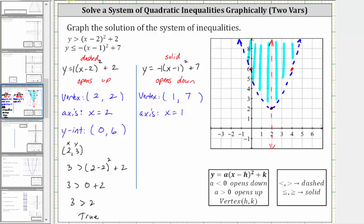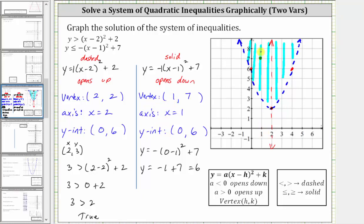Before we graph this, let's also determine the y-intercept of this quadratic function. We find the y-intercept by setting x equal to zero, then determining the value of y. Substituting zero for x, we have y equals the opposite of the quantity zero minus one squared plus seven. Simplifying inside the parentheses, we have negative one. The square of negative one is positive one, but we have a negative sign, so this simplifies to negative one plus seven, which equals six. So the y-intercept for the second parabola is the same as the y-intercept of the first. Let's first plot the vertex at one comma seven, and sketch the axis of symmetry. We know the vertical intercept is zero comma six.